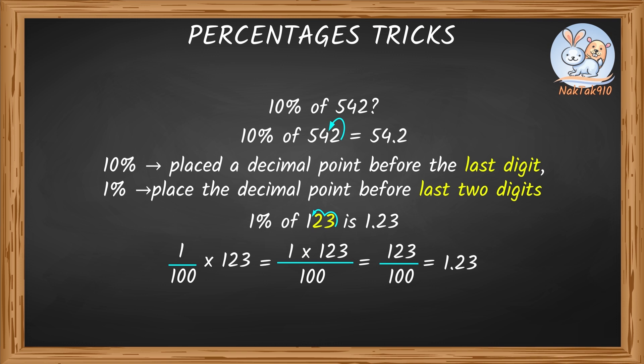Division by 100 means to just place the decimal point before the last two digits. Similarly, 1% which is 1 by 100th of a given number, which means we divide the given number by 100. So, we place the decimal point before the last two digits. So, 1% of 123 is 1.23.